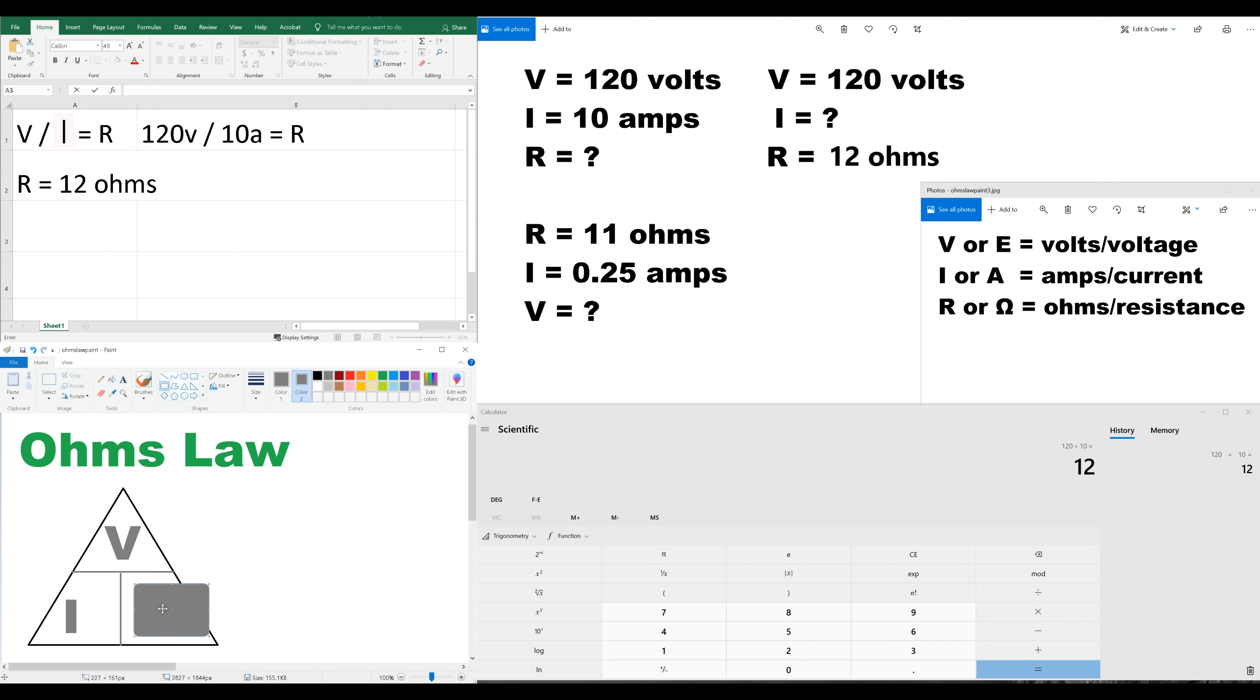So, now we have to solve for I. So, we're going to move it over the I, and we have V over R. So, this time, we're going to do V over R equals I. Which is 120 volts over 12 ohms equals I. And what does that end up being?